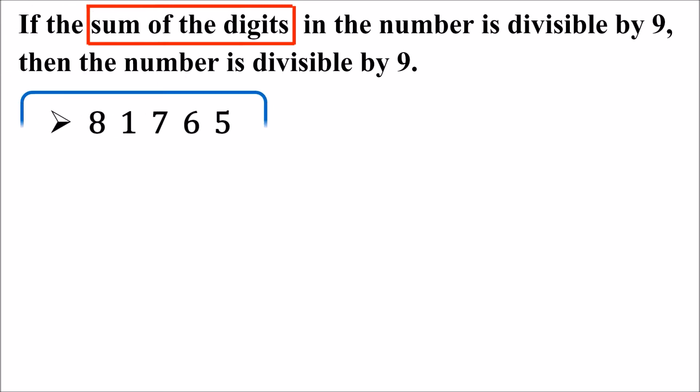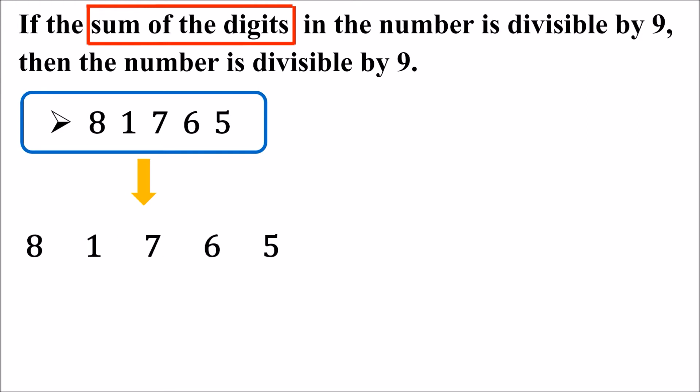Is this number divisible by 9? To know whether this number is divisible by 9 or not, we need to find out the sum of all the digits. The digits in this number are 8, 1, 7, 6, and 5. Let us add all the digits: 8 plus 1 is 9, 9 plus 7 is 16, 16 plus 6 is 22, and 22 plus 5 is 27.